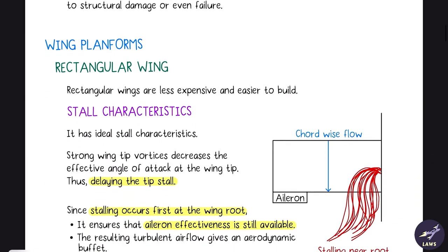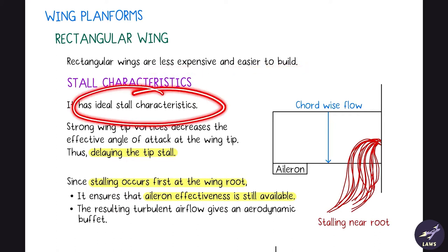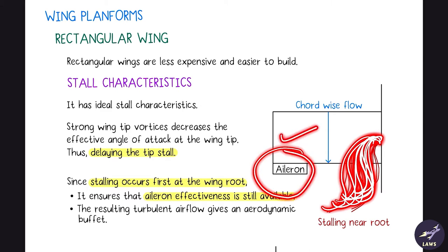Next are different wing planforms and their effect on stalling characteristics. Rectangular wings are seen in inexpensive aircraft like the Cessna 172. They are less expensive and easier to build. They have ideal stall characteristics — stalling occurs first at the root — so you still have aileron effectiveness and can control the aircraft.